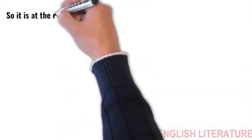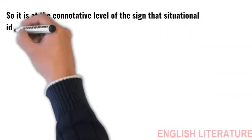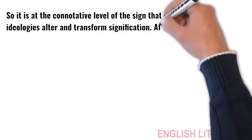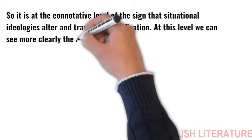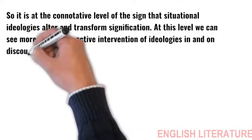Hall says we must remain conscious about the appearance of the coded message. So, it is at the connotative level of the sign, the situational ideologies alter and transform signification. At this level, we can see more clearly the active intervention of ideologies in and on discourse.